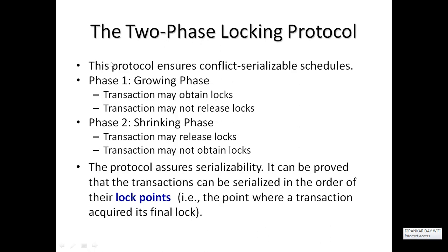Now, what is the two-phase locking protocol? In two-phase locking we can implement conflict serializability. There are two phases: phase one is the growing phase and phase two is the shrinking phase. In the growing phase, transactions may obtain locks but may not release any locks. In the shrinking phase, a transaction may release locks but cannot obtain any new locks.